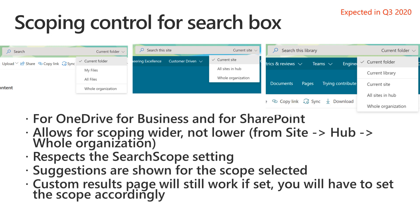For example, if you set it to hub for a site associated with the hub, you'll only see 'all sites in hub' and 'whole organization' scopes — not the current site scope. If you set it to whole organization, you won't see the scoping control at all since you can't change it further down. The suggestions shown will match the selected scope, so switching to current folder shows suggestions from that scope, and switching to hub or whole organization shows suggestions accordingly.